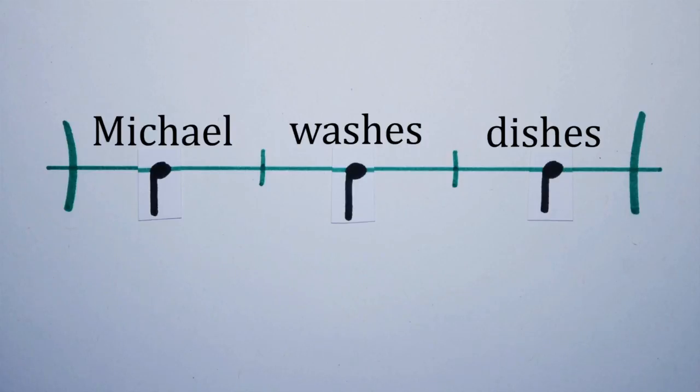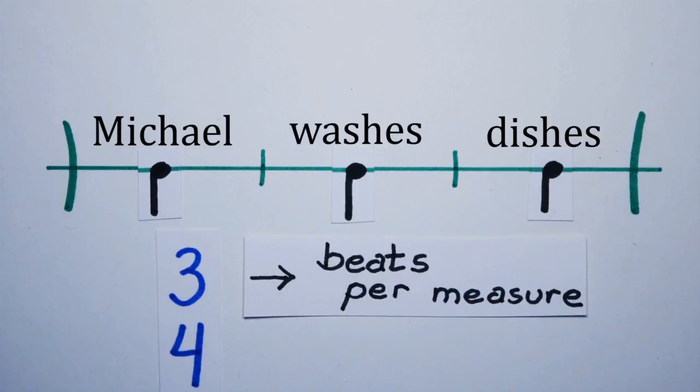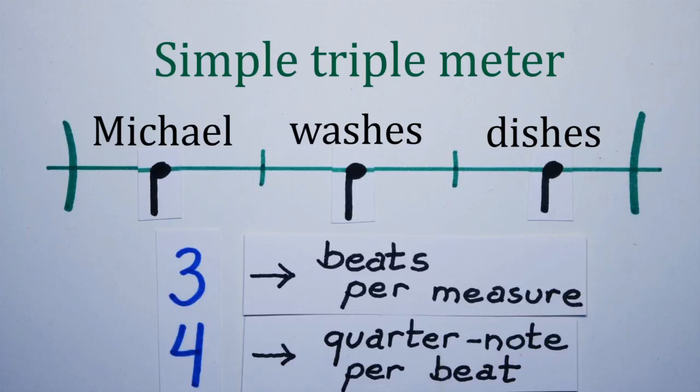The time signature for this measure is three four. The top number means three beats per measure and the bottom number means one quarter note per beat. This pattern is an example of simple triple meter.